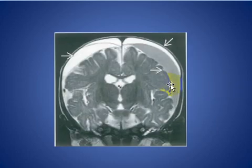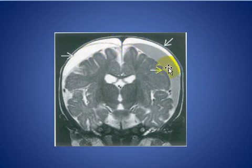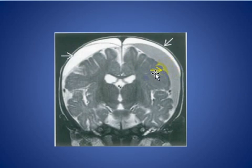Here, the MRI of the patient shows different ages of subdural hematoma compressing the cerebral cortex. In a child under two years of age, this is highly suggestive of child abuse.